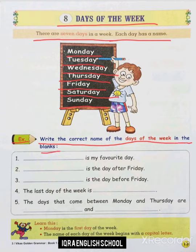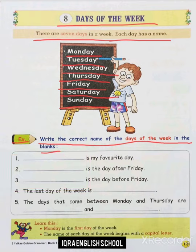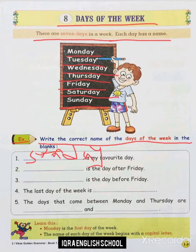Okay, so we'll move to the exercise. Write the correct names of the days of the week in the blanks. What we have to do — we have to write the correct names of the days of the week in the blanks given here. Moving to the first one: blank is my favorite day. What will be your favorite day? For children, Sunday is the favorite day. Whenever there is no school — from Monday to Saturday — Sunday is your favorite day, so you can write Sunday here.